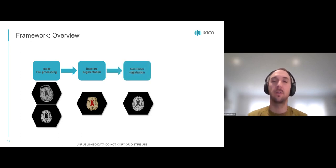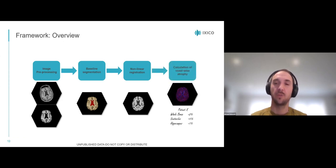The third part is the non-linear registration part, in which the baseline image is warped into follow-up space. And the fourth part is calculating the voxel-wise atrophy using the baseline segmentations and the deformation matrix. I'll now go into detail for all four parts of the framework.